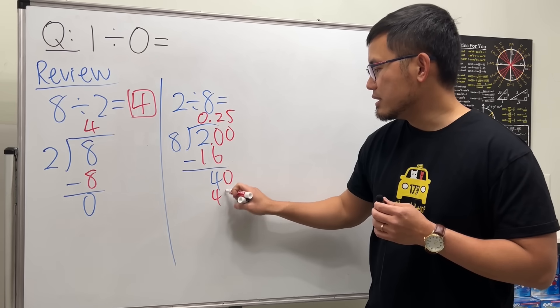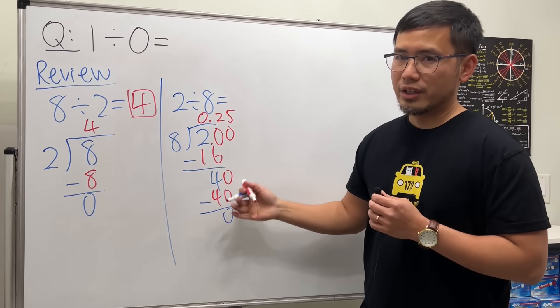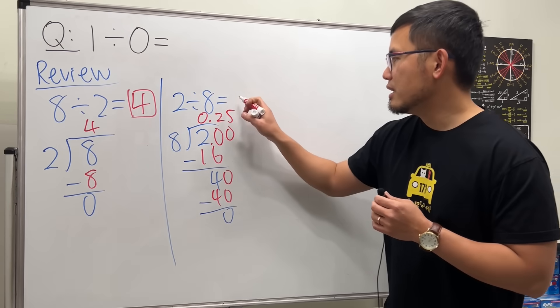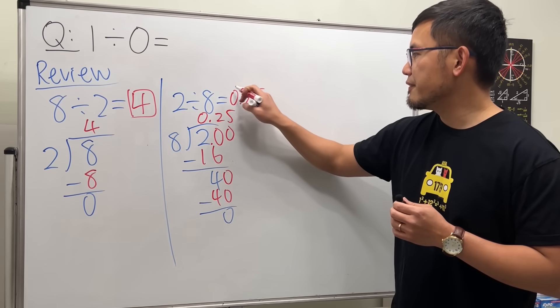5 times 8 is 40 exactly. The remainder is 0. We are done. And the answer for this is 0.25. Done.